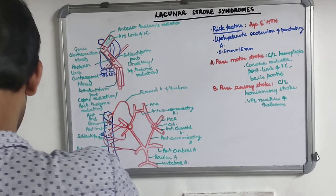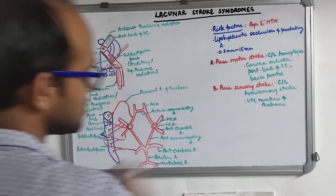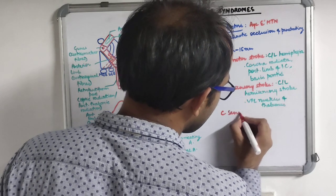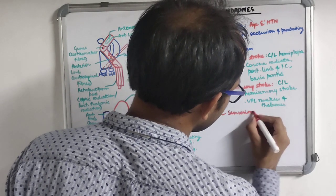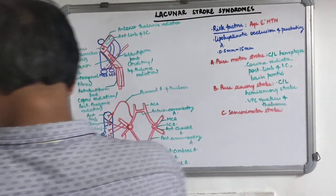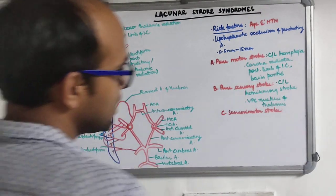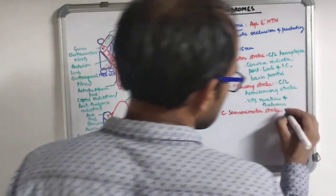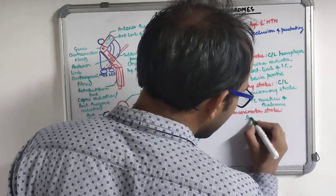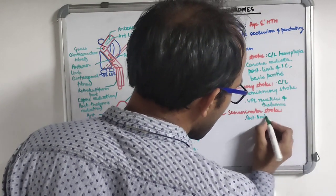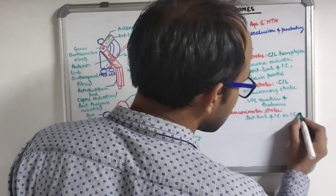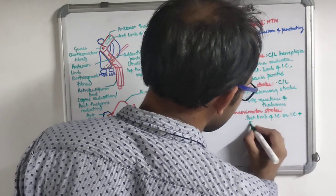Another syndrome is sensorimotor stroke, in which there is hemisensory loss and hemiplegia on the contralateral side. It occurs when there is involvement of the posterior limb of the internal capsule, or internal capsule plus thalamus.